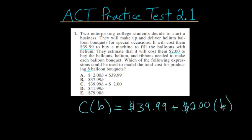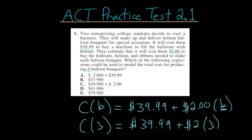And you can test this. Let's say you wanted the cost of three bouquets. We would still have to pay this initial cost of $39.99. But then we're essentially just substituting the number three for the variable B here. So we'd have this $2 multiplied by three,